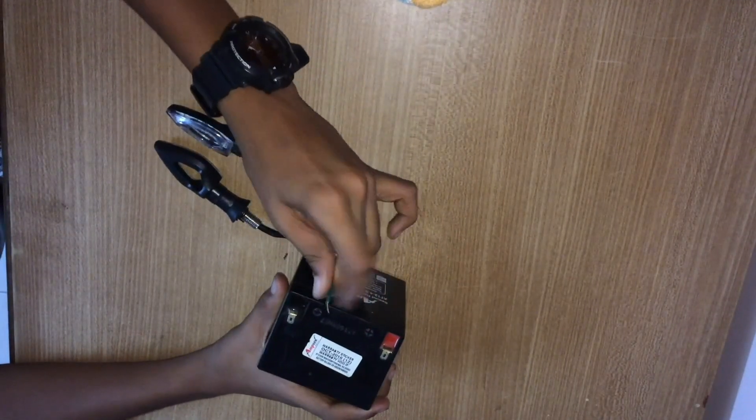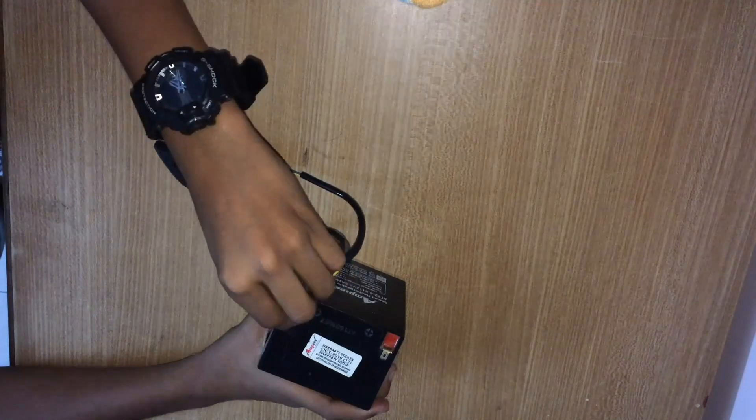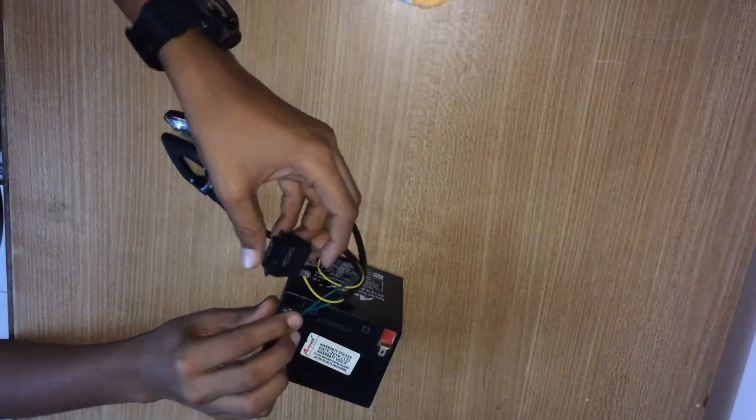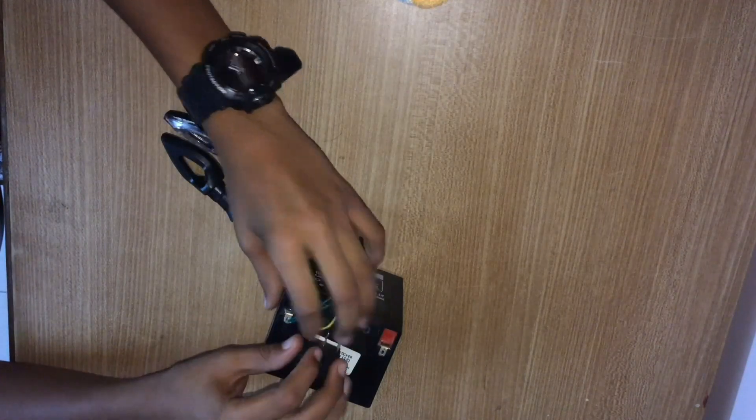Join all the negative wires to the front to the negative terminal of the battery. If you are using 4 indicators, join all the 4 indicators negative wires together.